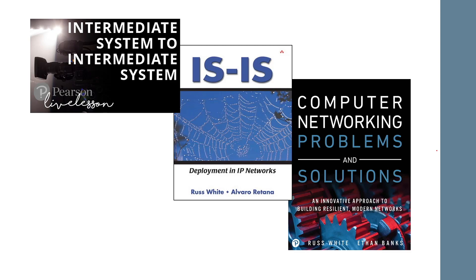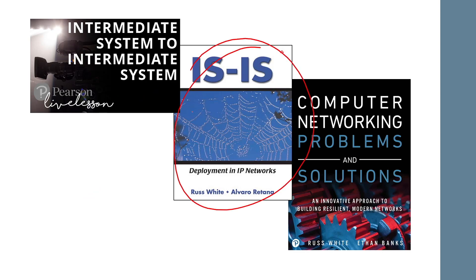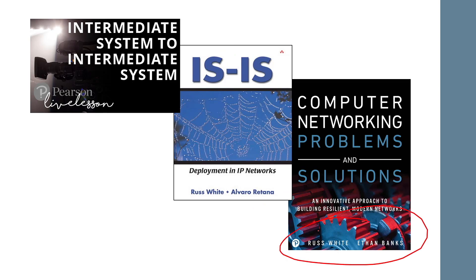A lot of people complain that IS-IS is so hard to learn. Look, there are many resources: Jeff Doyle's book has a good IS-IS section, there's an intermediate systems live lessons — six hours of video on IS-IS available on Safari Books. There's the old ISIS book by Alvaro Retana and myself with a foreword by Mike Sham, one of the people who invented ISIS along with Radia Perlman. There's also 'Computer Networking Problems and Solutions' by Ethan and me, which covers how link state works.